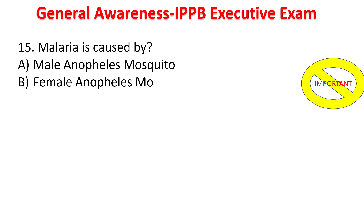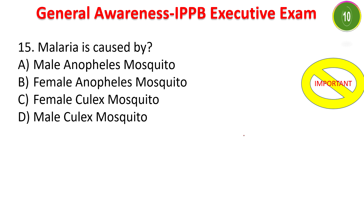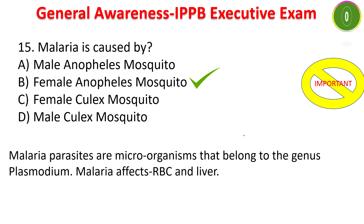Next question: malaria is caused by — male Anopheles mosquito, female Anopheles mosquito, female Culex mosquito, or male Culex? The answer is female Anopheles mosquito. Malaria parasites are microorganisms belonging to the genus Plasmodium. Malaria affects red blood cells (RBC) and the liver.